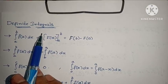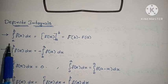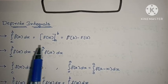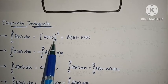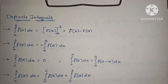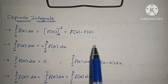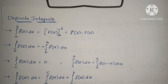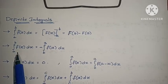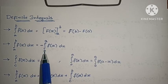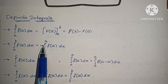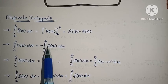Next, definite integrals chapter. For integral a to b of f(x) dx, first find the integration, call it capital F(x), then apply upper limit minus lower limit: F(b) minus F(a). Property: Integral a to b of f(x) dx equals minus integral b to a of f(x) dx — swapping limits introduces a minus sign. When upper limit equals lower limit, integral c to c of f(x) dx equals zero. Property: Integral 0 to a of f(x) dx equals integral 0 to a of f(a-x) dx. This formula is very useful when direct integration is difficult.